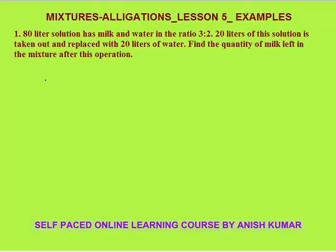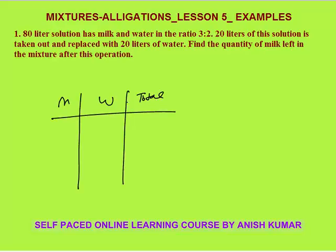This is mixtures and allegation lesson 5. I will continue with examples. The first question says that an 80-liter solution has milk and water in the ratio of 3 to 2. So milk would be 3/5 of 80, that is 48 liters, and water would be 32 liters.